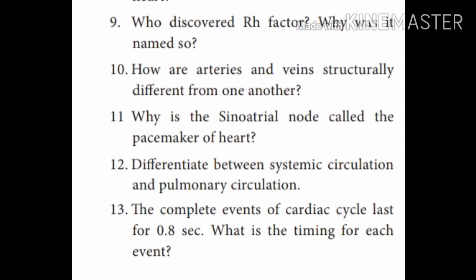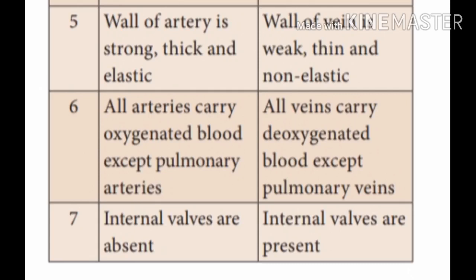Question ten: How are arteries and veins structurally different? There are six differences. First: walls of arteries are thick, strong and elastic, while walls of veins are weak, thin and non-elastic. Second: internal valves are absent in arteries, while internal valves are present in veins. Points five and seven cover the structural differences for this question.